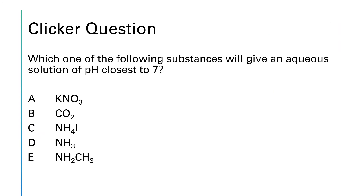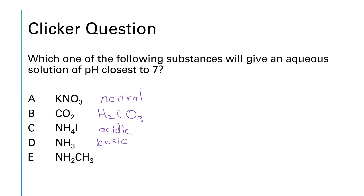The first salt came from a strong acid and a strong base, so it will be a neutral salt. CO₂ dissolves in water to give carbonic acid, so that solution will be acidic. Ammonium iodide is from a weak base and a strong acid, so it will be acidic. Ammonia is a base, so that solution will be basic. Methylamine is also a base, so it will be basic. The one closest to pH 7 will be potassium nitrate.